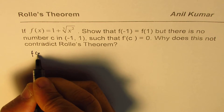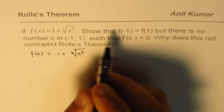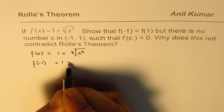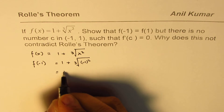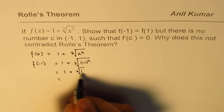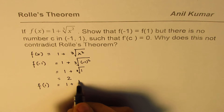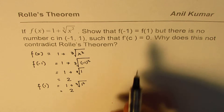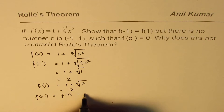What we're given here is a function f(x) equals 1 plus cube root of x squared. We need to show that f(-1) equals f(1). f(-1) equals 1 plus cube root of (-1) squared, which equals 1 plus cube root of 1, that is 1 plus 1, which is 2. f(1) equals 1 plus cube root of 1 squared, which is also 1 plus 1, equals 2. So we have verified that f(-1) equals f(1), and it equals 2.